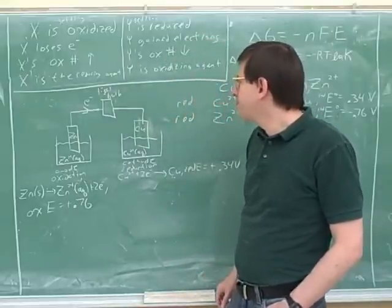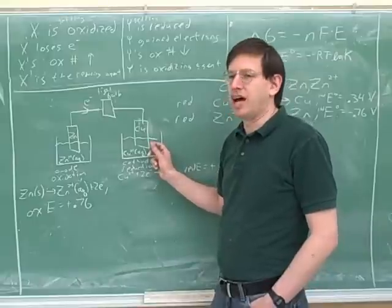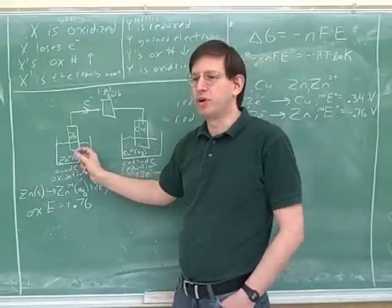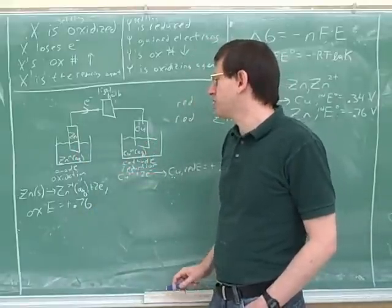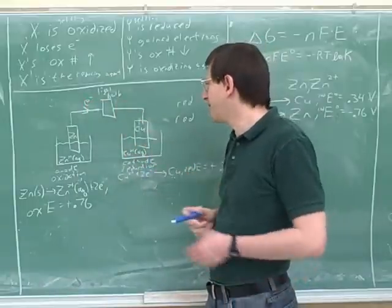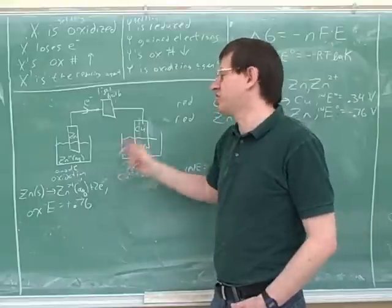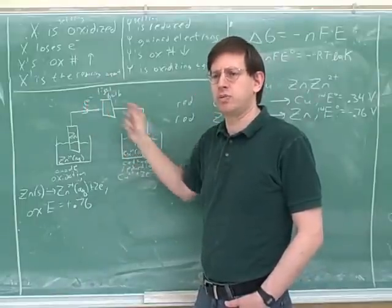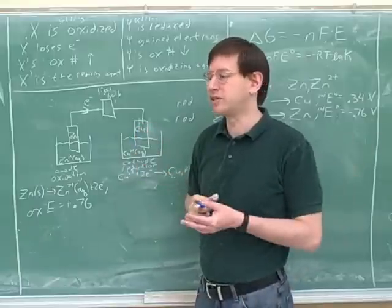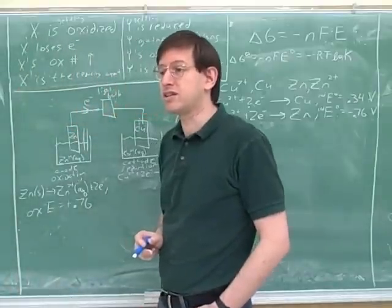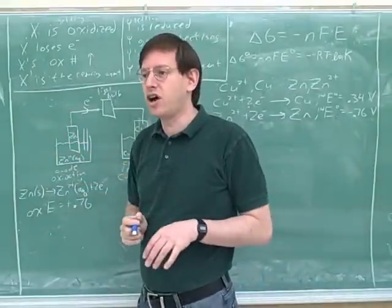One problem with this is: over time, what's going to happen to this cell? This side is going to become more and more negative as electrons move over here, and this side will become more positive. That means the whole process would shut down very quickly, because once this side becomes negative it would repel the electrons. We want a continuing source of electrons, so we need something to cancel out those negative charges. That's what the salt bridge is for. In chemistry, salt is just code for ions — a salt is simply an ionic compound.